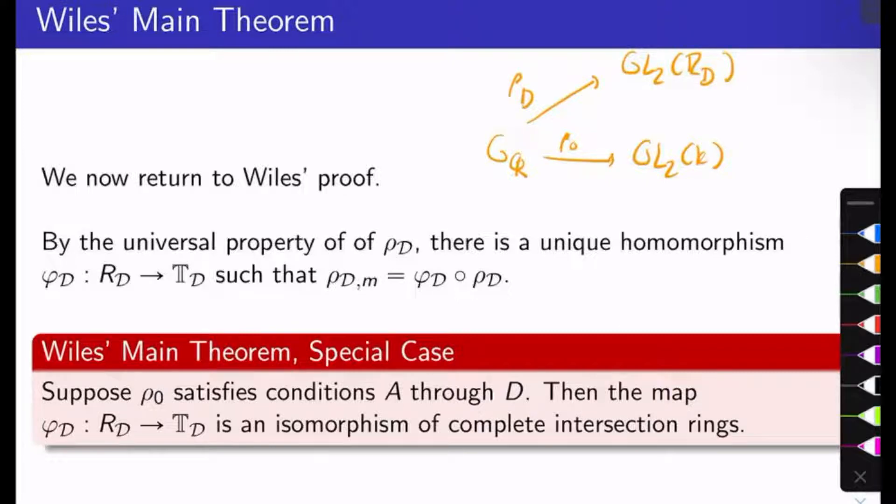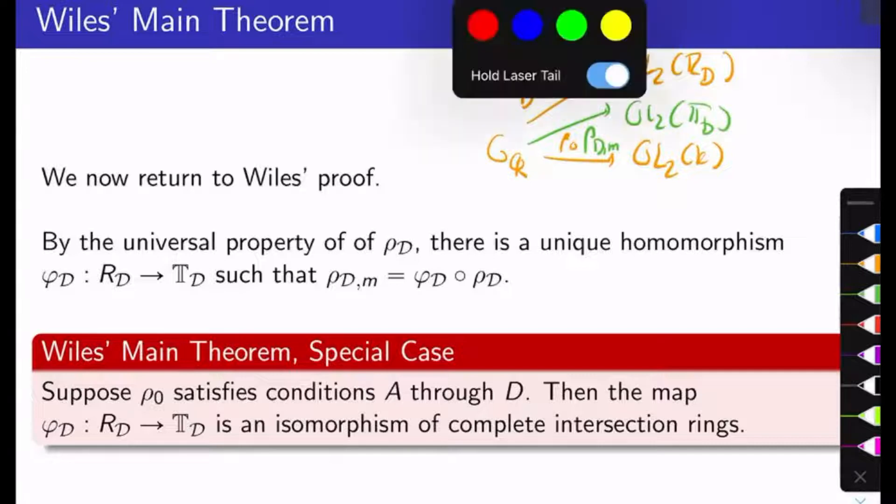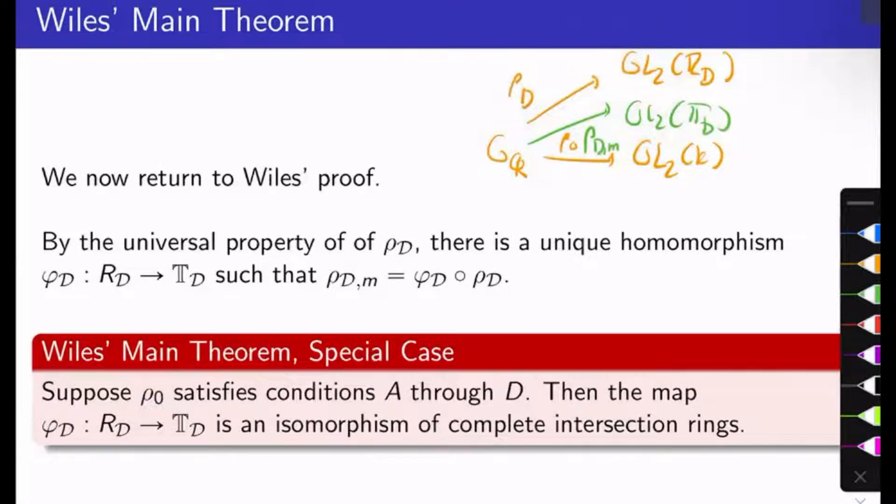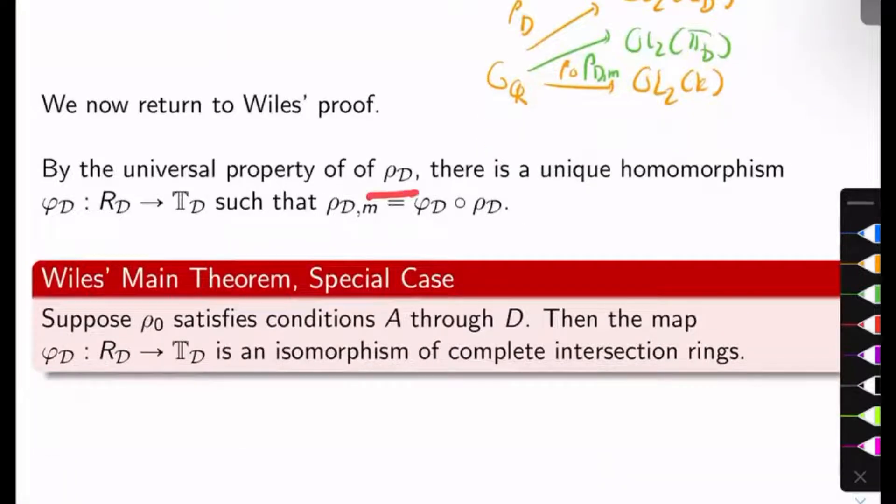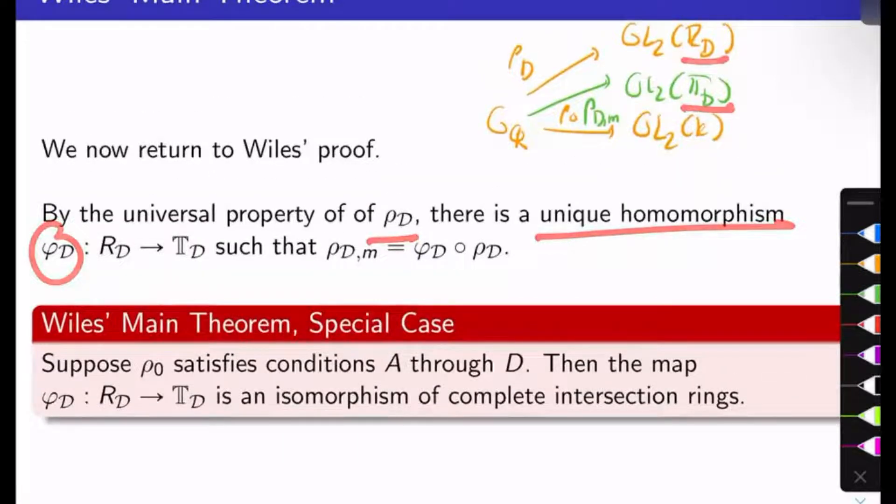But remember, we also have a universal modular deformation rho_DM headed up to GL2(TD). Well, every deformation, modular or not, filters through rho_D in some sense, and so rho_DM will filter through rho_D. And so by the universal property of rho_D, there's a unique ring homomorphism, which I'll call phi_D from RD to TD commuting this diagram here.